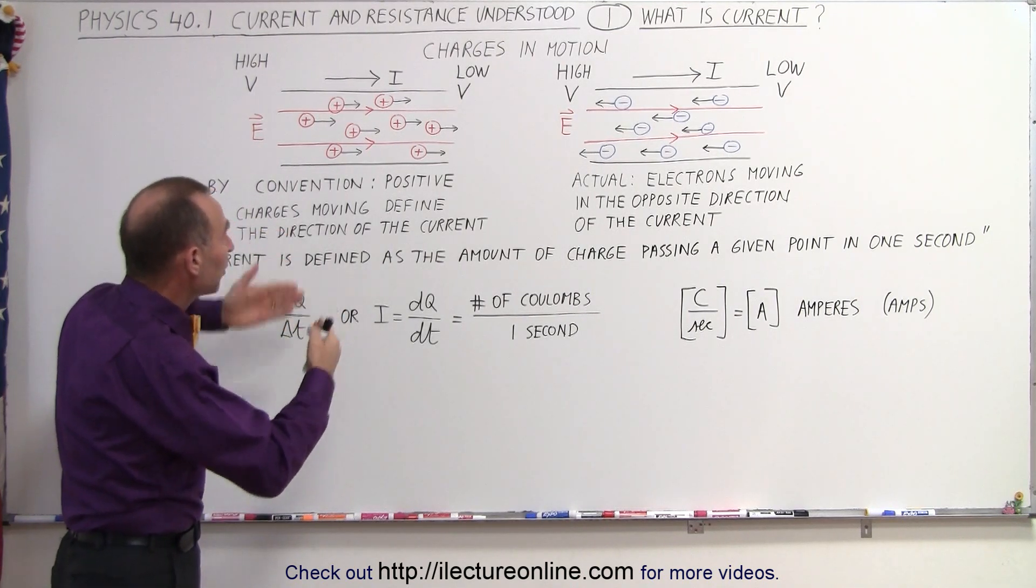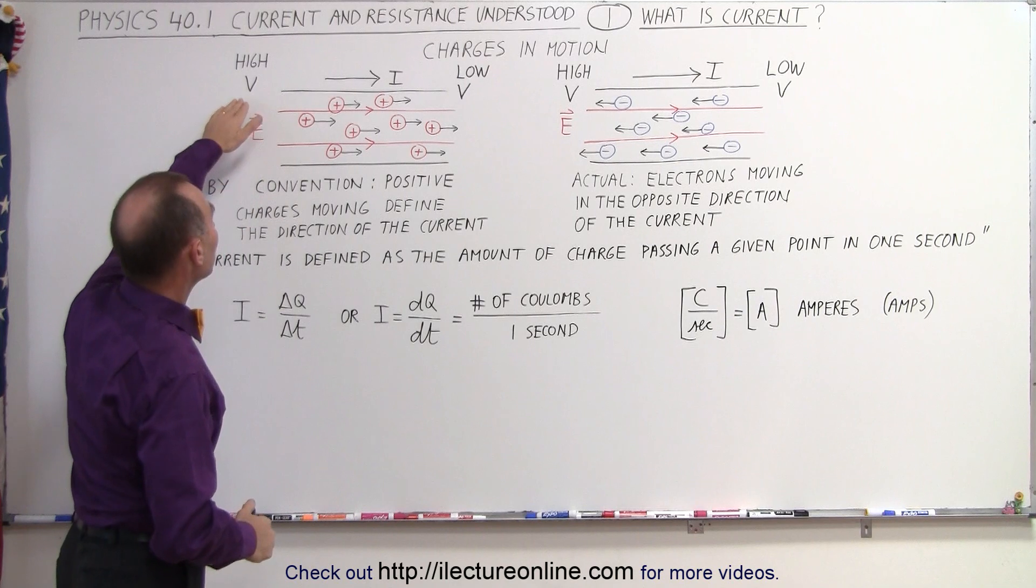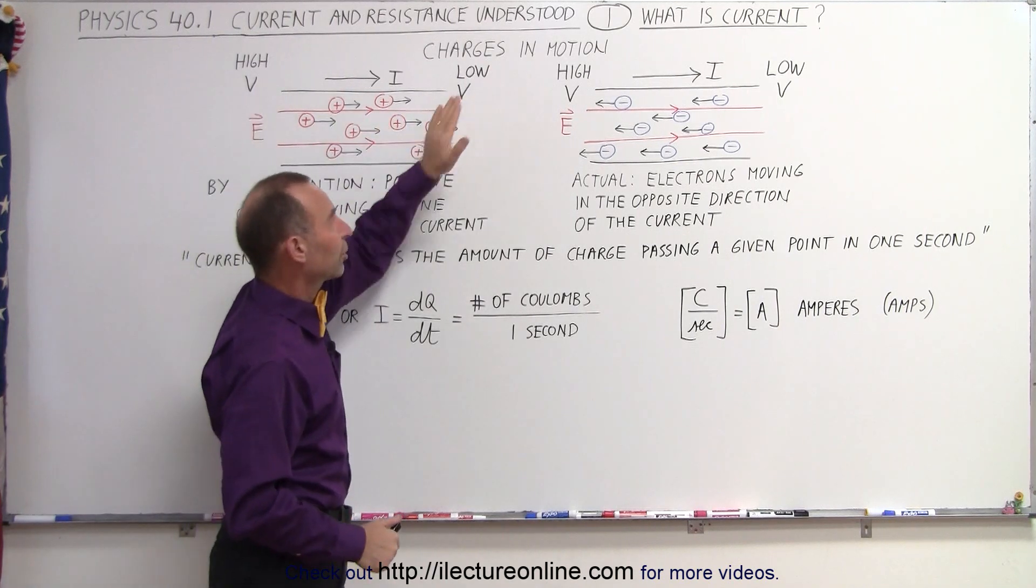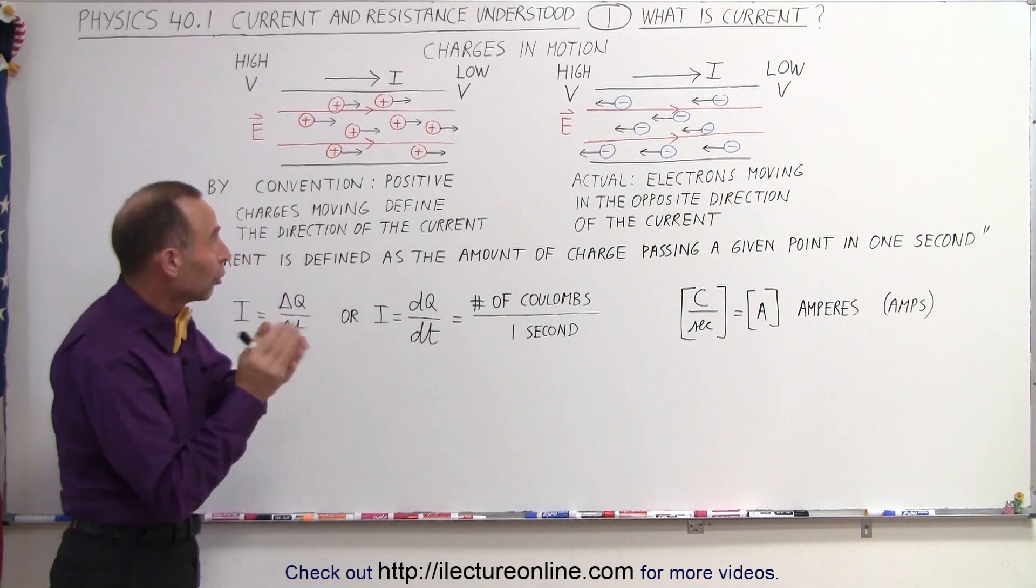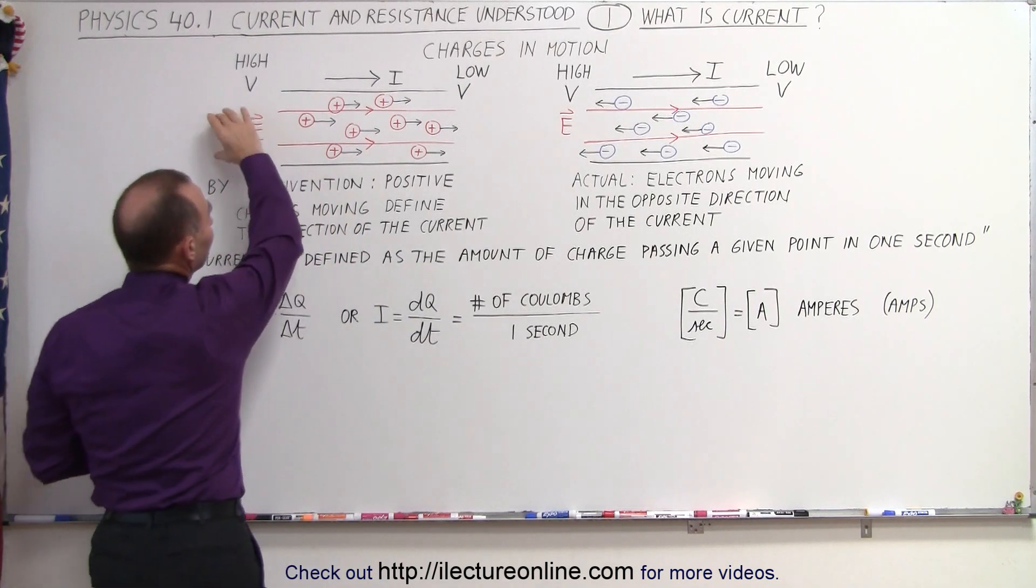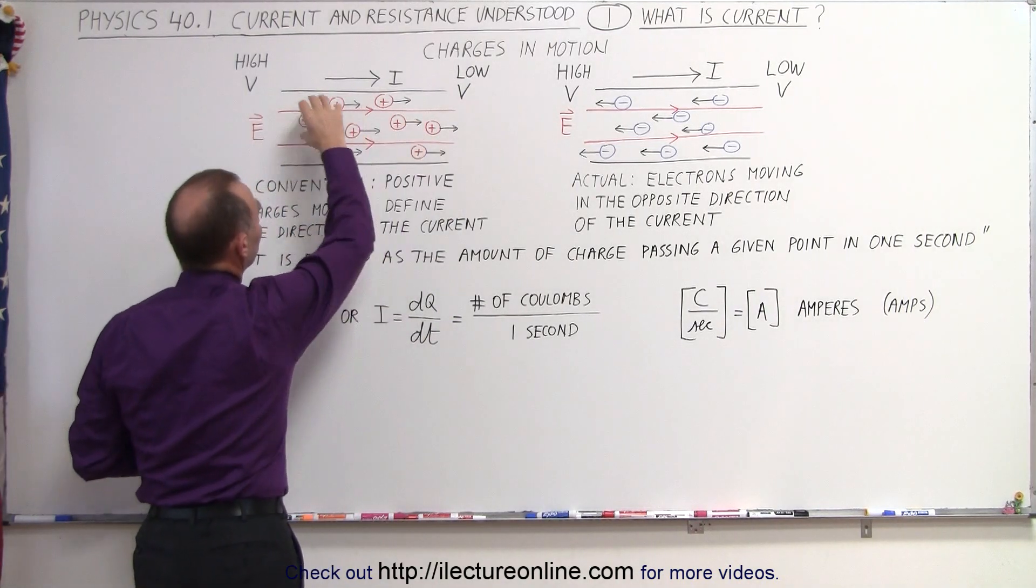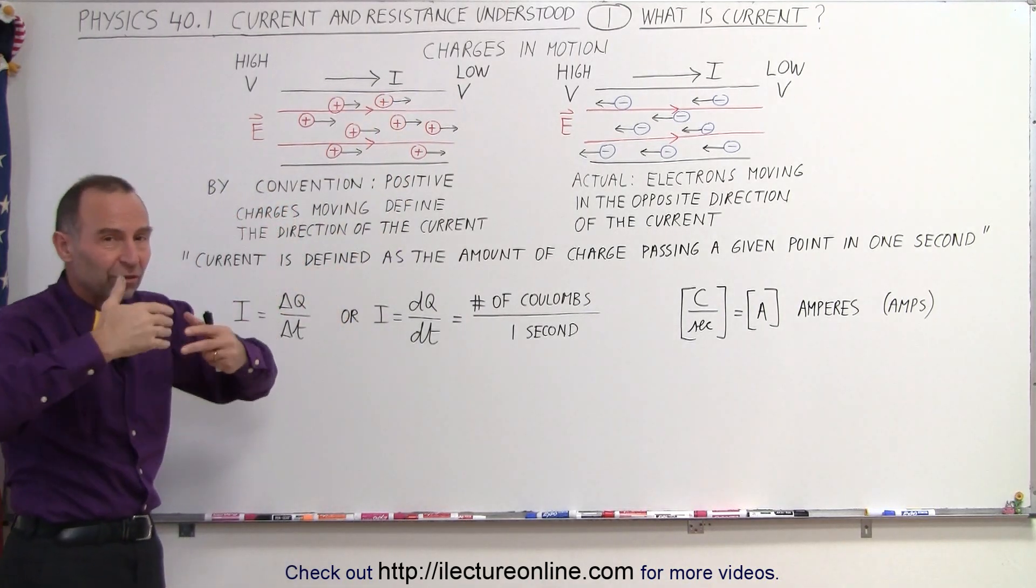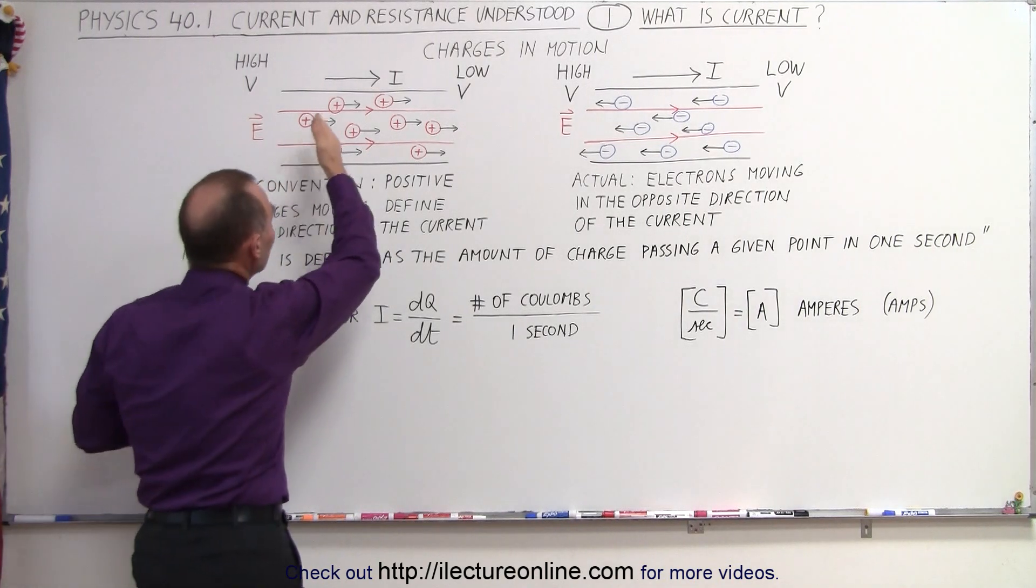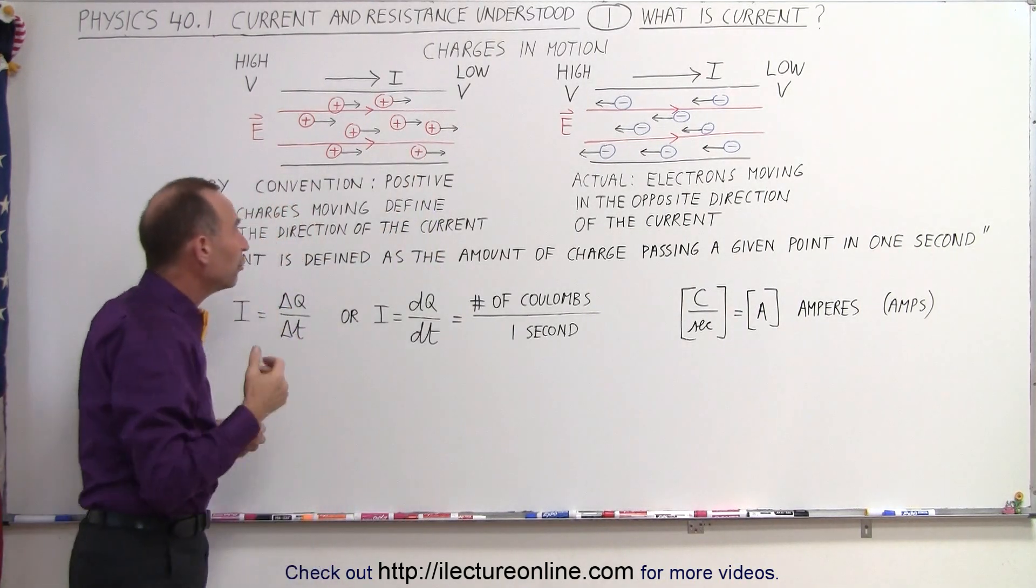That happens, or the movement of charges happens, when we have a potential difference across a conductor. So if one side of it is at high potential and the other side is at low potential, it creates an electric field through the conductor. And so therefore charges inside that conductor feel a force, feel something pushing them, which makes them move through the conductor.